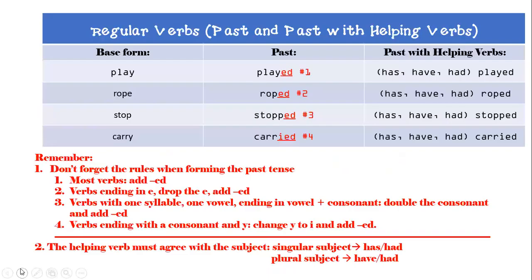Before we begin talking about irregular verbs, let's do a small review of what we've covered so far. We've talked about regular verbs — these are the verbs that when we form the past tense we add ED at the end. We have four examples in the base form: play, rope, stop, and carry, and we've changed each one into the past tense. Here are the rules we used to form the past tense, and then we have past with helping verb, which we've already done for you.